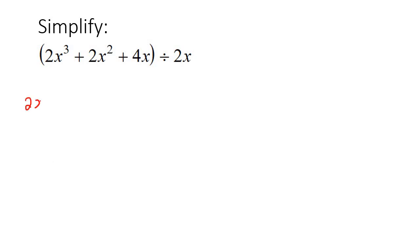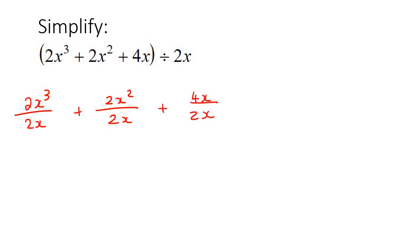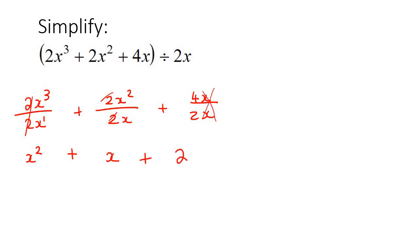And then our last example. We write it as 2x to the power of 3 over 2x, plus 2x to the power of 2 over 2x, plus 4x over 2x. The 2s cancel, and with 3x at the top and 1x at the bottom, you're left with x to the power of 2. For the next part, the 2s cancel and you're left with x, since there are 2x at the top and 1x at the bottom. Here the x's cancel, and 4 divided by 2 is 2. And there's our final answer.